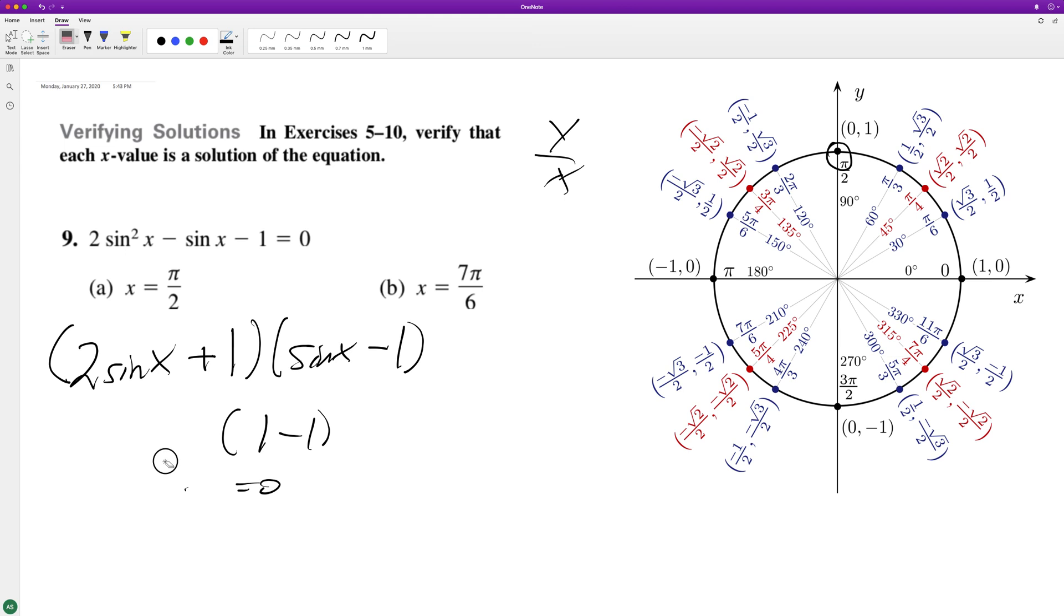What about when we plug in seven pi over six? That's right here. That's equal to negative one half. So two times negative one half plus one, that's equal to negative one plus one. So that gives us zero times negative one half here, so we get negative three halves.